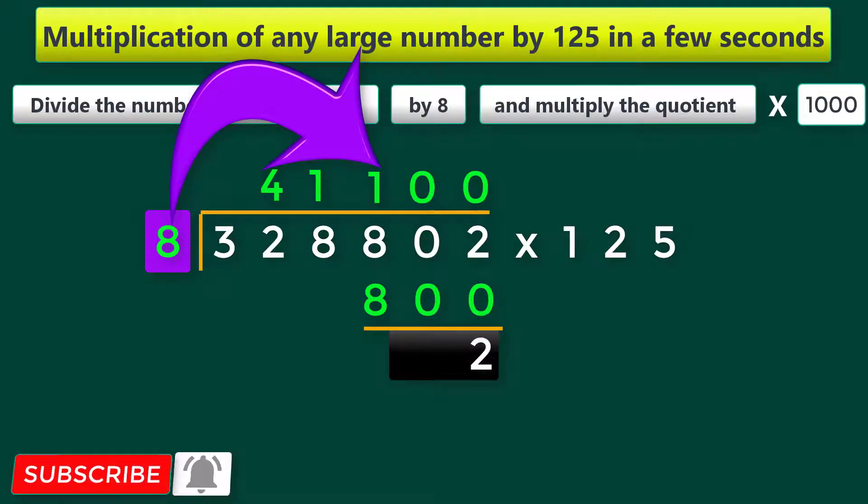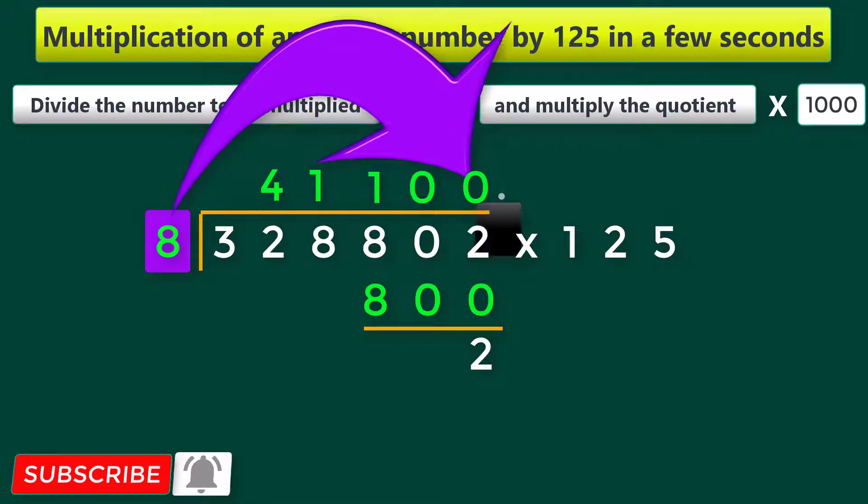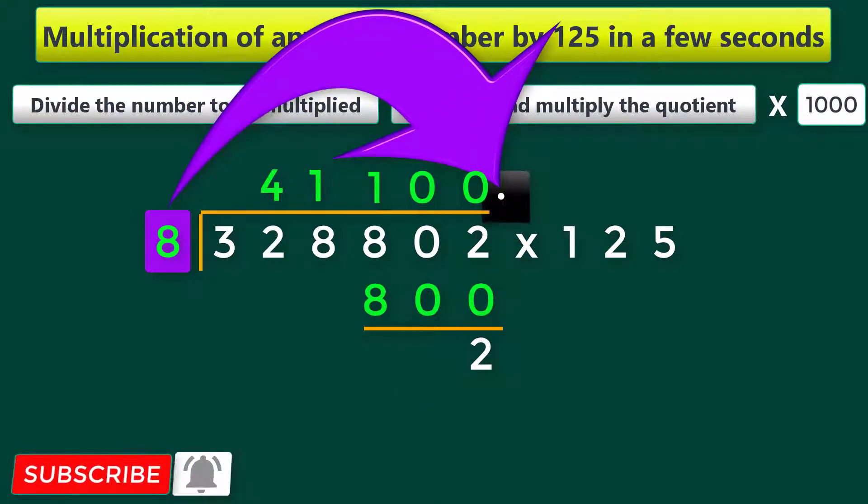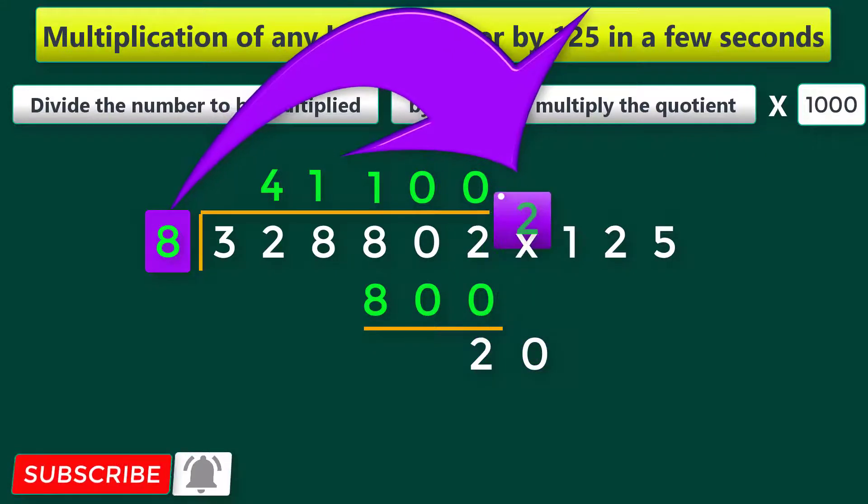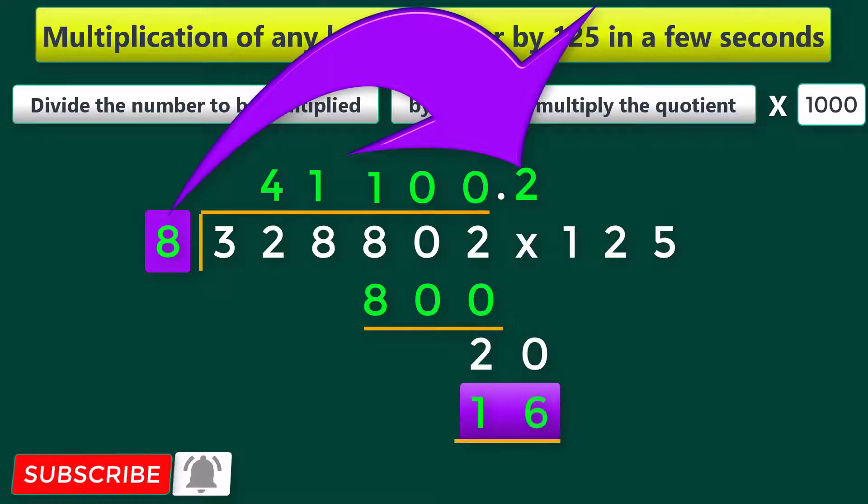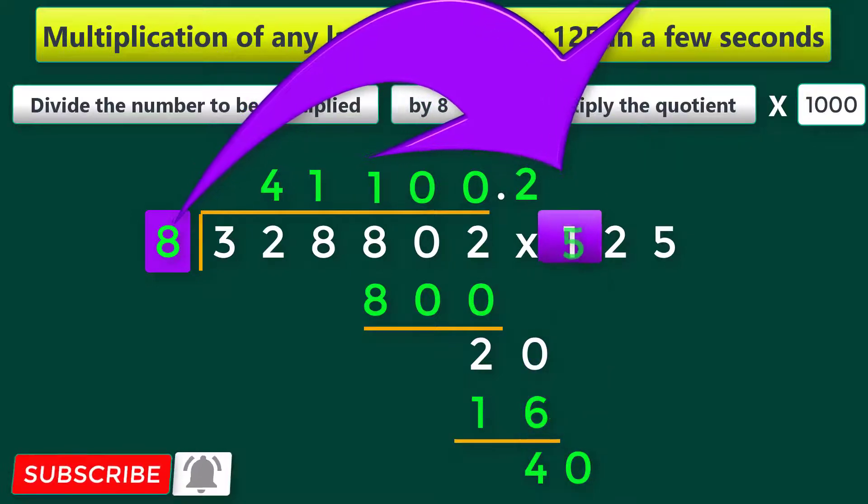Since the digit 2 is smaller than the divisor 8, put the decimal point in the quotient and put a 0 next to the digit 2 to make it 20. Now 8 twos are 16. Still 4 left. So put a 0 next to this 4 to make it 40. Now 8 fives are 40.